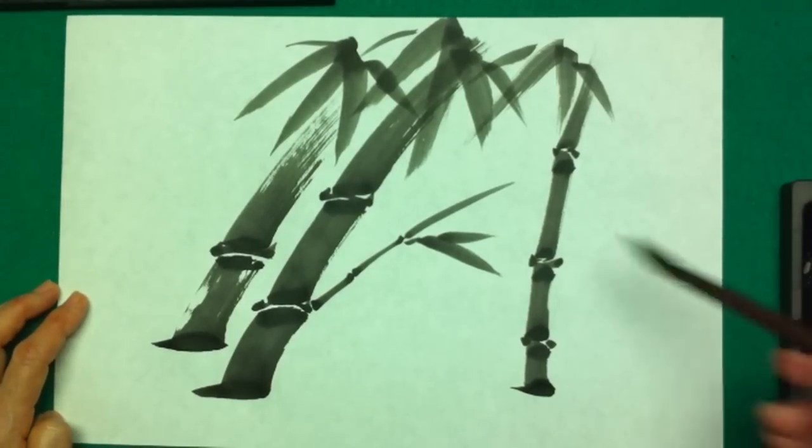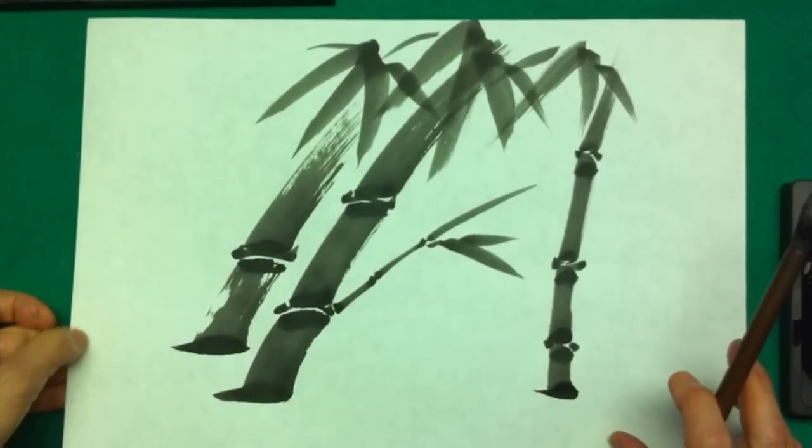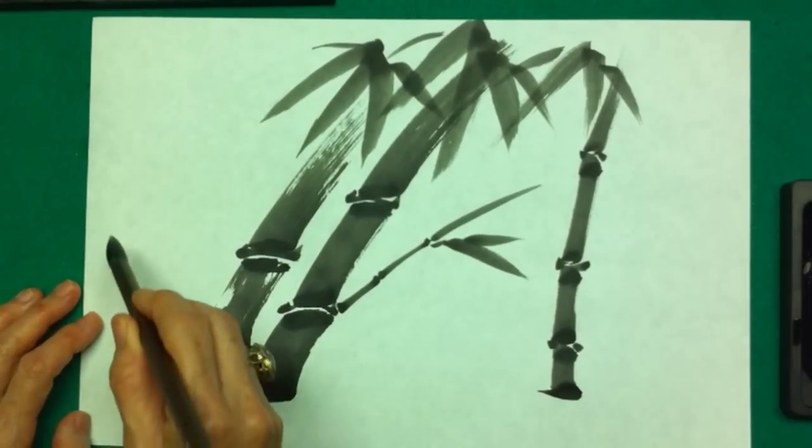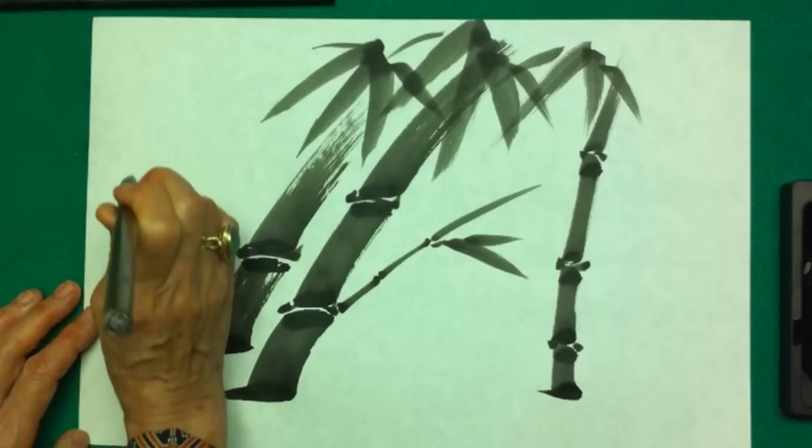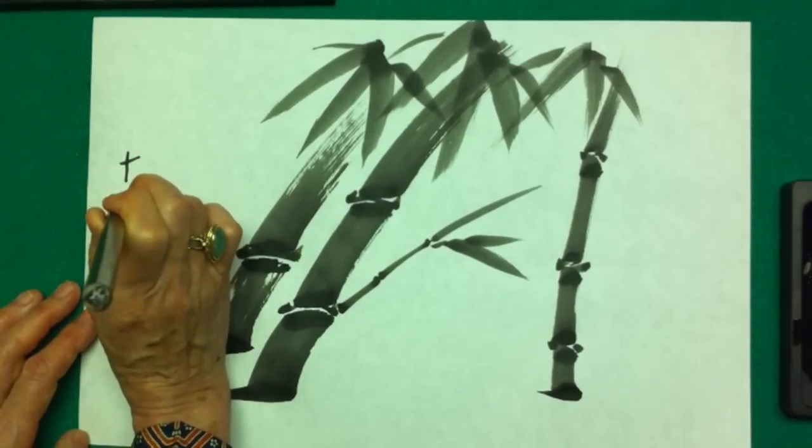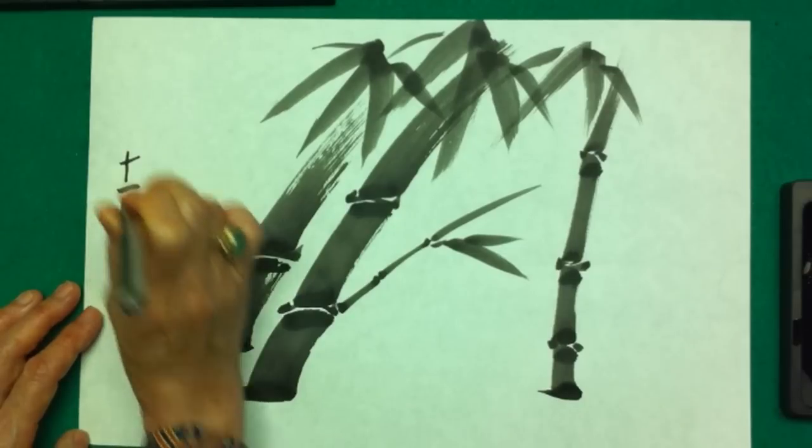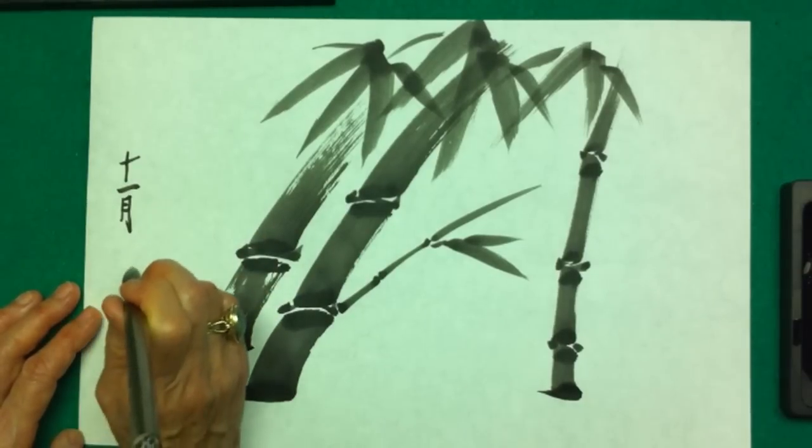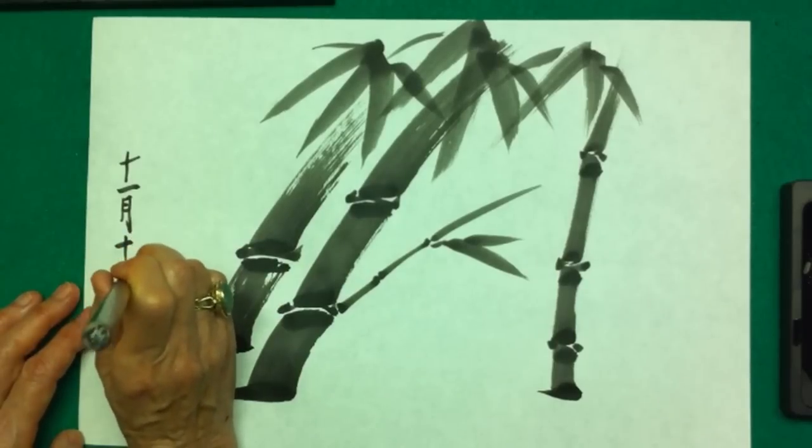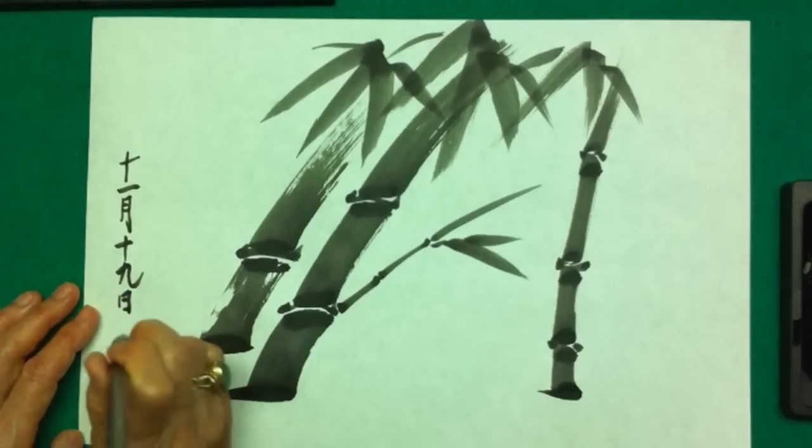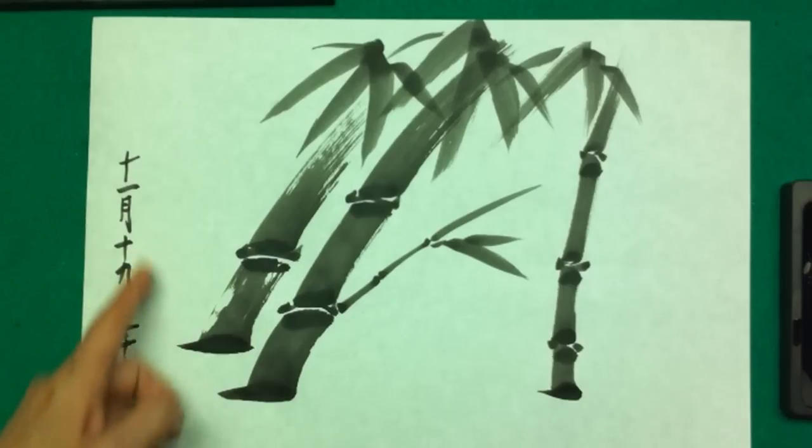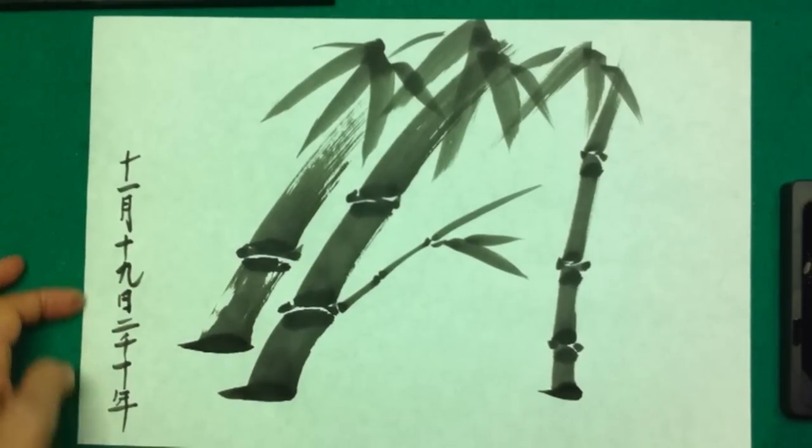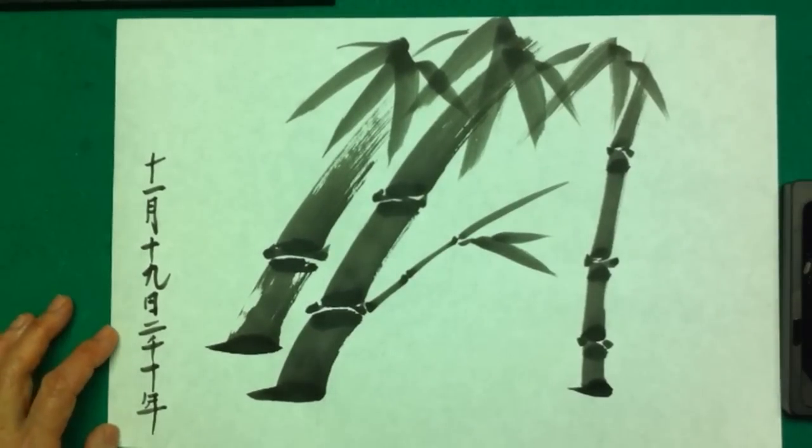When you have a piece of paper like this and you've finished with your painting, you add your name and date here. That's 11 months, 19th today, 2010. Date it to mark when it's been done, and move it a little bit to the side.